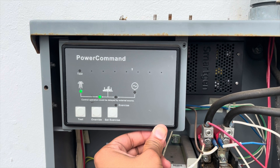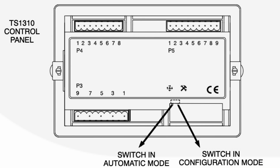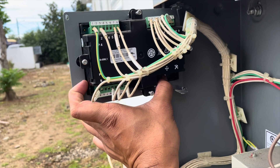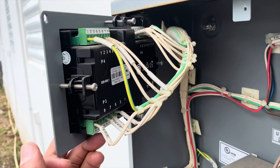To start working with this controller, you want to make sure that you have battery power and set the controller in configuration mode. The configuration mode is selected by operation of a small slide switch located in the back of the control panel, near the bottom edge of the PCB. The switch is partially hidden to prevent accidental operation. Note that once configuration mode is selected, all automatic operations of the transfer switch are suspended.